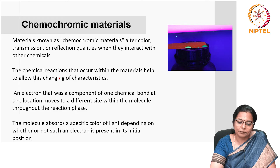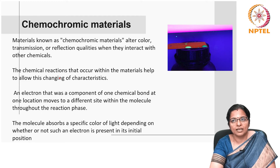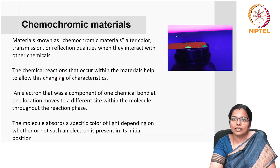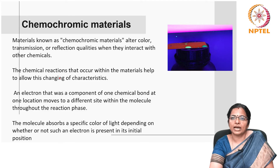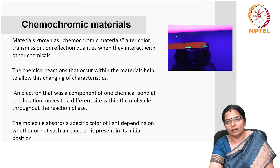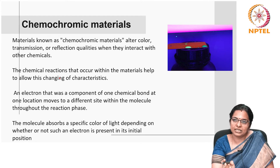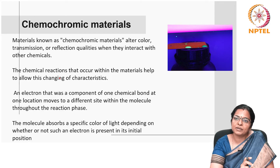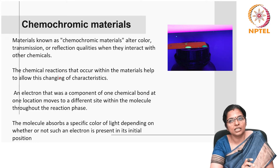Let us now look at chemochromic materials. Materials known as chemochromic materials alter color, transmission or reflection qualities when they interact with other chemicals. The chemical reactions that occur within the materials allow this change of characteristics. An electron that was a component of one chemical bond at one location moves to a different site within that molecule through the reaction phase, and the molecule absorbs a specific color of light depending on whether or not such an electron is present in its initial position.